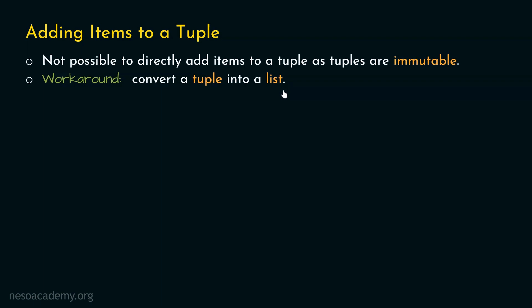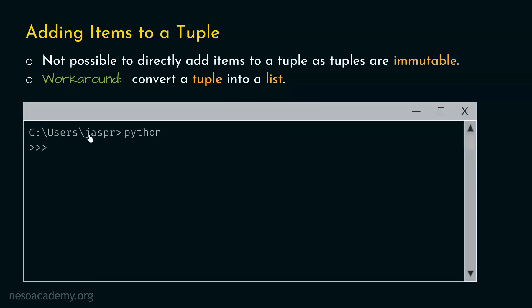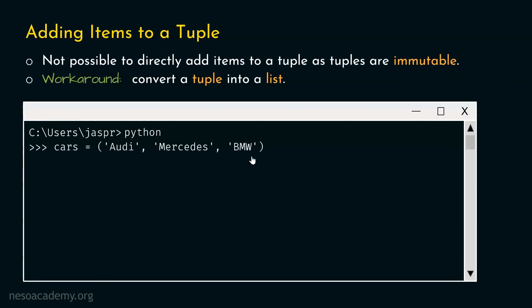In order to see this in action, let's open our command prompt and activate the Python interactive shell. Let's type: cars = ('Audi', 'Mercedes', 'BMW'). We have this tuple cars with three items: Audi, Mercedes, and BMW. Let's say we want to add a new item Toyota. First, we will convert this tuple into a list.